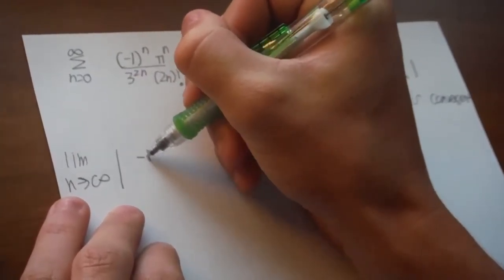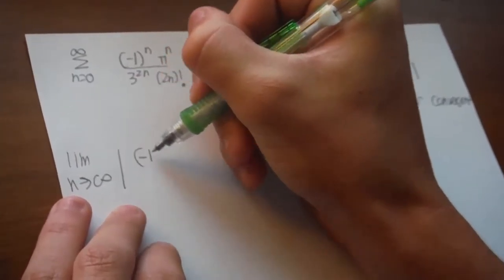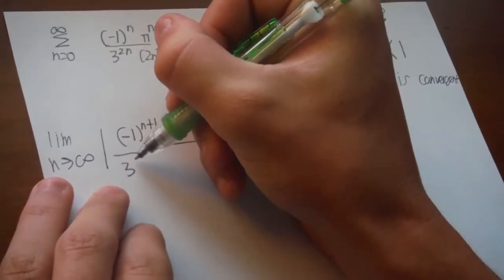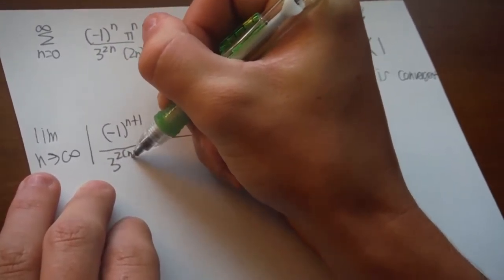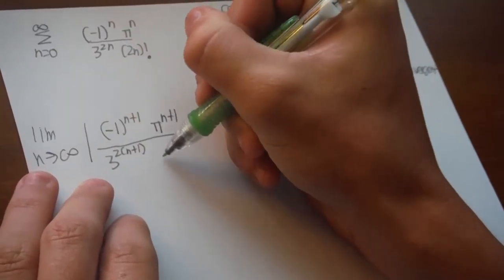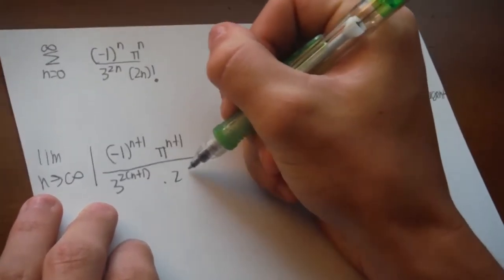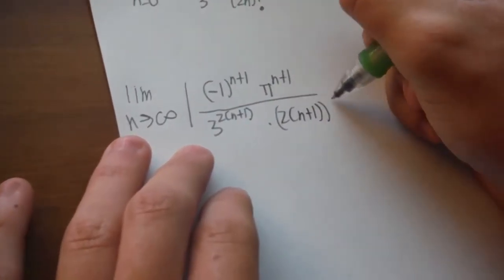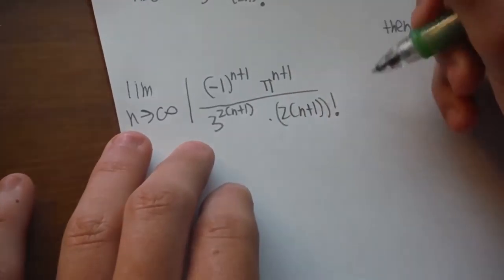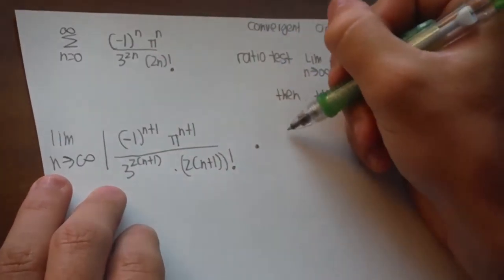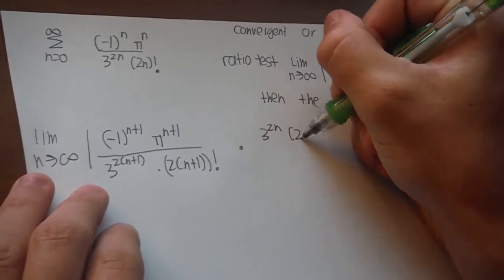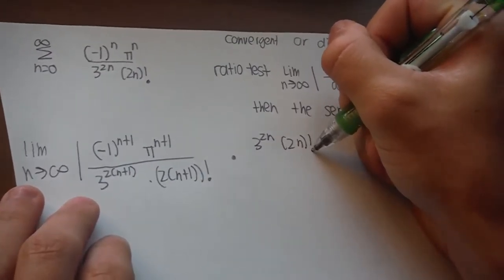So you set that up, it's going to be the limit as n goes to infinity of the absolute value of negative one to the n plus one times pi to the n plus one over three times two to the n plus one times two n plus one factorial.